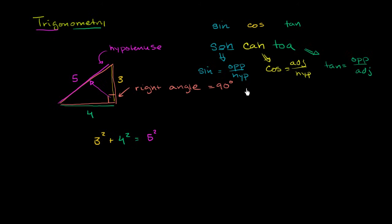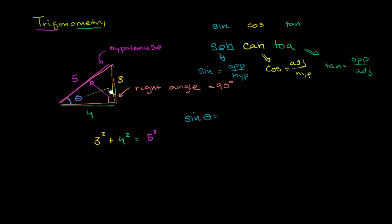You're probably asking what "opposite," "hypotenuse," and "adjacent" mean. Let's take an angle theta between the side of length 4 and the side of length 5. To find the sine of theta, sine is opposite over hypotenuse. The opposite side to theta is the 3 — the side it opens onto. The hypotenuse is 5. So sine of theta equals 3 over 5.